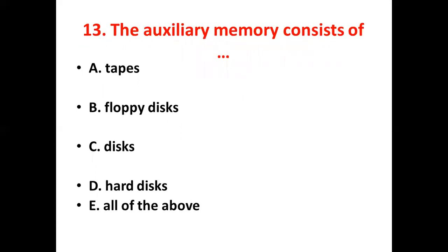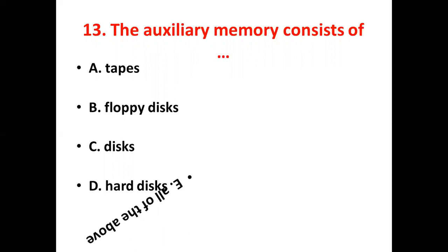13th bit: The auxiliary memory consists of dash. Option A, Tapes. Option B, Floppy disk. Option C, Disk. Option D, Hard disk. Option E, All of the above. The answer is Option E, All of the above.